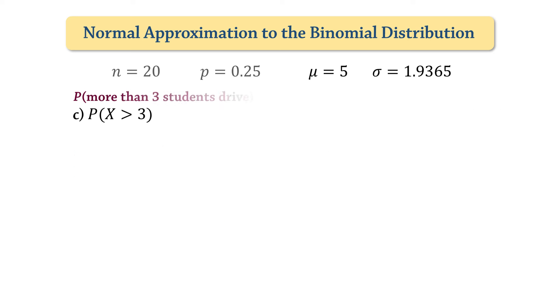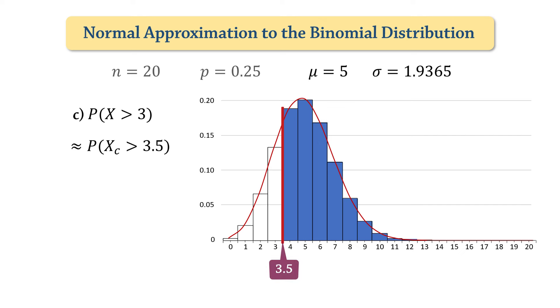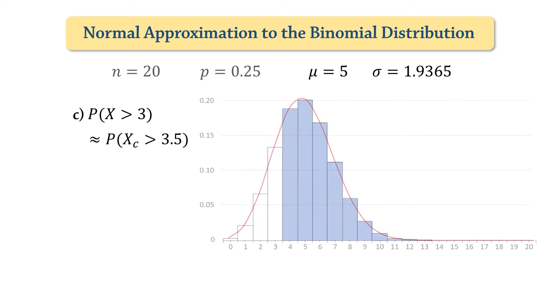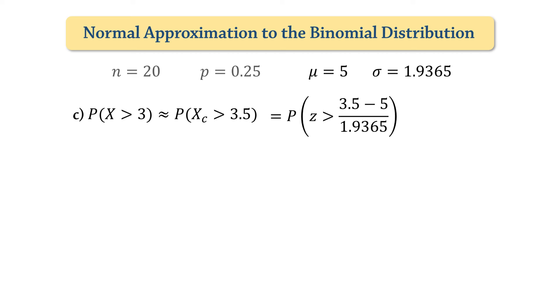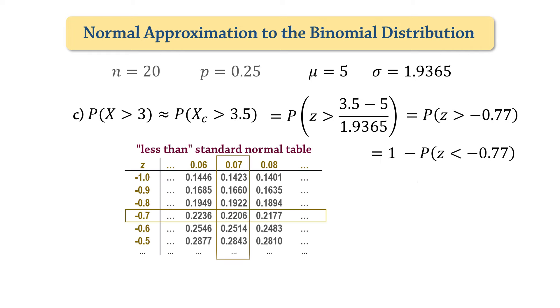Next, for more than 3, if we're using the binomial formula, we will need to add up the probabilities of 4, 5, 6, and so on up to 20. However, with normal approximation, we start here, midway between 3 and 4, and therefore calculate the probability that x is greater than 3.5. On standardizing, it gives the probability that z is greater than negative 0.77, which is 1 minus p of z less than negative 0.77, giving 0.7794.